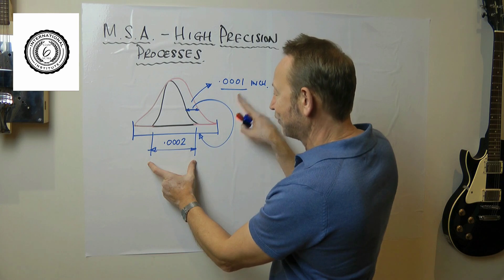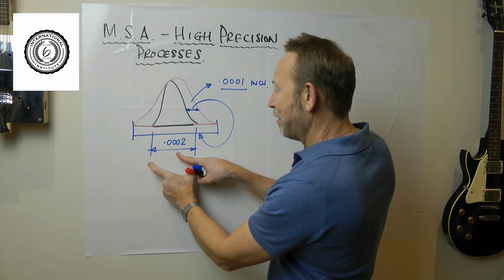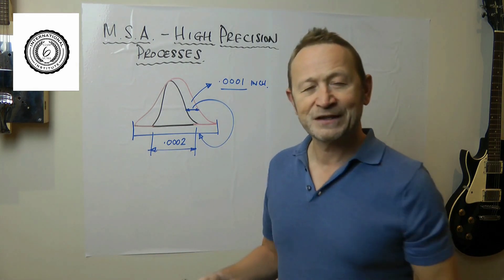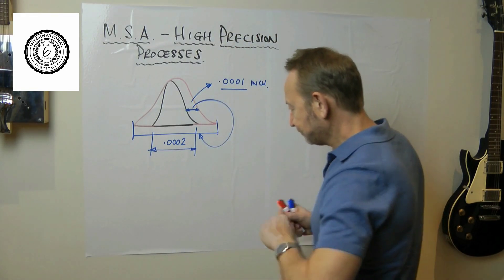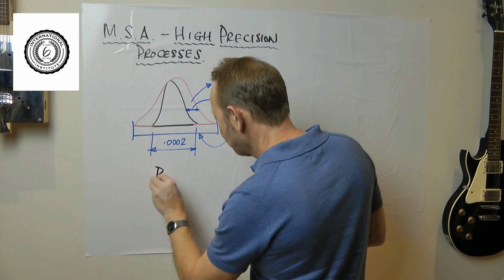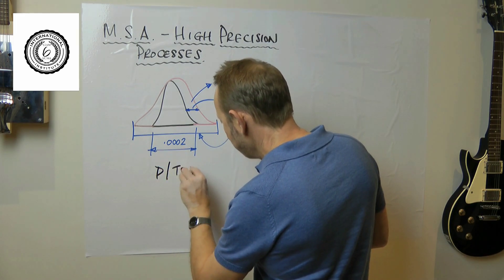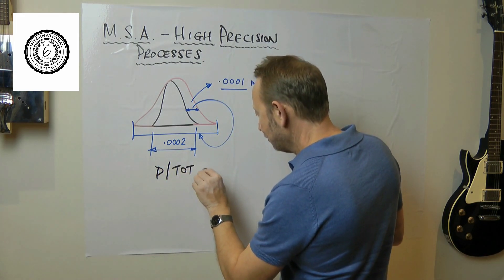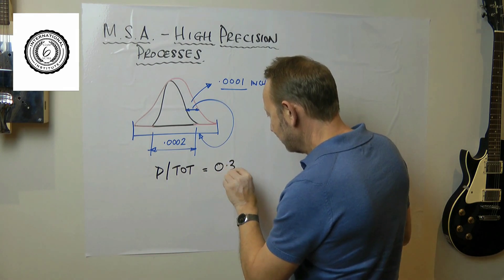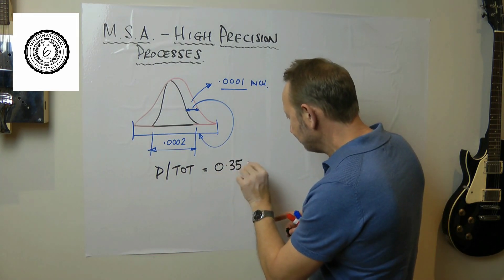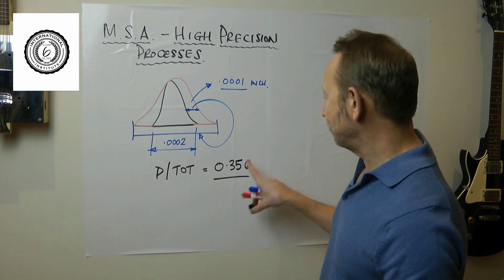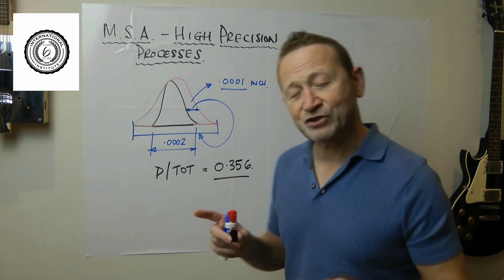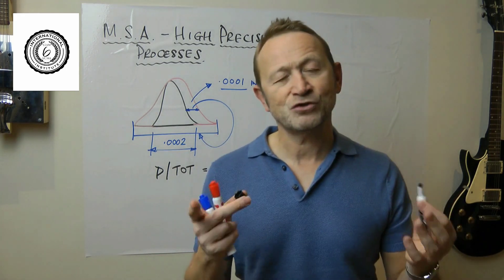So when we compare the error that you make to the variability in the parts, it's always going to look large. So although what we've got is a precision to total, and this might be the best that these guys achieve, the precision to total is 0.356, that might be the best that they're going to do. Now that doesn't pass our normal rules, but actually I'm saying to this guy you've got a great measuring system.